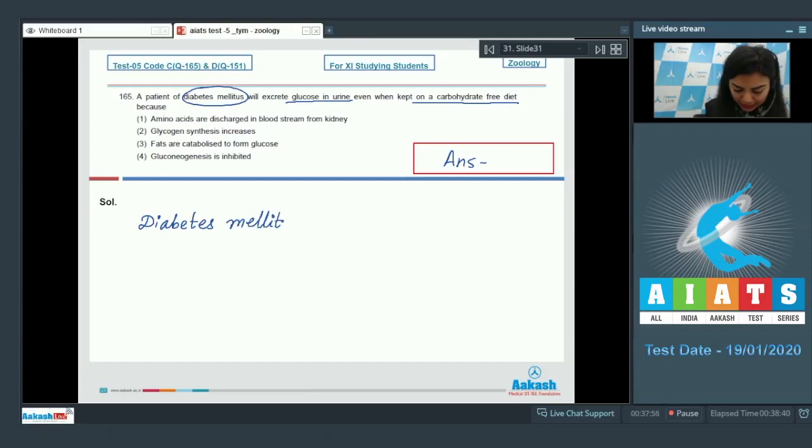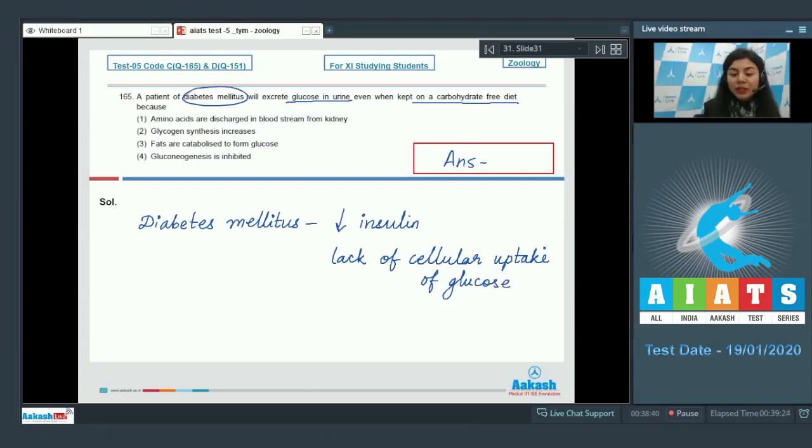A patient of diabetes mellitus would suffer from deficiency of insulin, and when there is insulin deficiency there would be lack of cellular uptake of glucose. This means the body cells would starve because of lack of glucose, and when glucose is not available for energy they will initiate the breakdown of fats for energy.